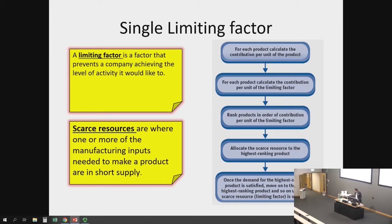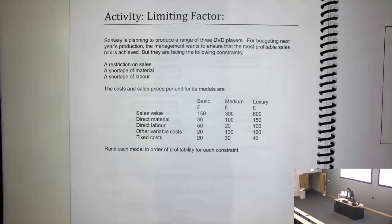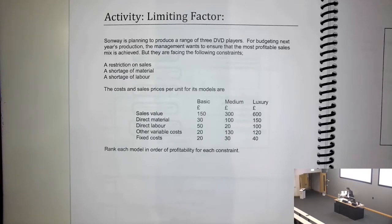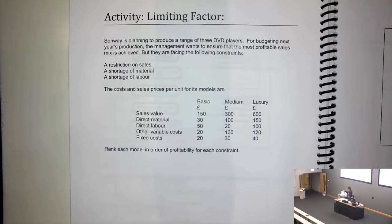It will make a lot more sense once we do this exercise. Sunway is planning to produce a range of three DVD players. For budgeting next year's production, the management wants to ensure that the most profitable sales mix is achieved. But they are facing the following constraints. In reality, you could have more than one constraint.